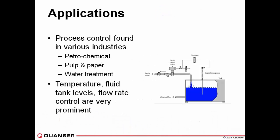Applications. This is a specific system that deals with process control. Process control is found in various industries. I'm not aware of all your backgrounds if you may or may not be from the industry, but I'll briefly go over some stuff. Process control can be found in industries such as petrochemical, pulp and paper plants, water treatment. There's many other examples.